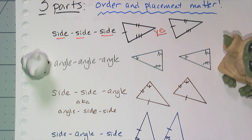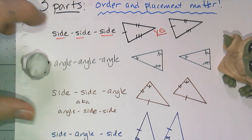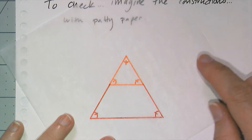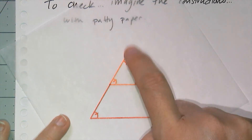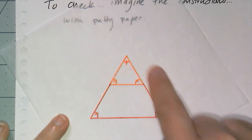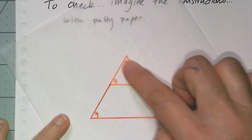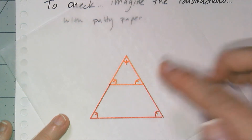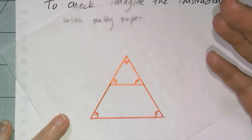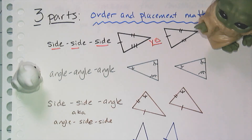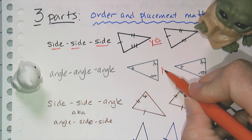Now let's look at if all three angles are congruent — and this one's actually really easy. All you have to do is think about equilateral triangles. Here I have two equilateral triangles drawn together. They share an angle at the top, but that orange triangle is not congruent to the bigger triangle at all. Just because the angles are the same doesn't mean the sides are going to be the same. So angle-angle-angle is a no.